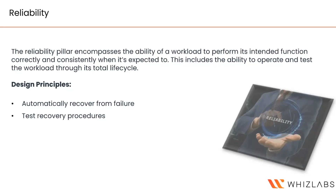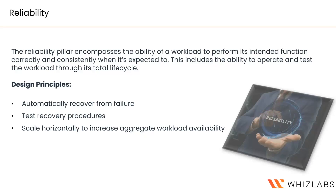The second reliability principle is to test recovery procedures frequently. Backups and restoration processes should be tested, and various failure scenarios should be simulated and tested to make your application more reliable and reduce risk. The third principle is to scale horizontally to increase aggregate workload availability. Rather than increasing the instance size (vertical scaling), add more instances (horizontal scaling) to handle increased requests — this eliminates a single point of failure.